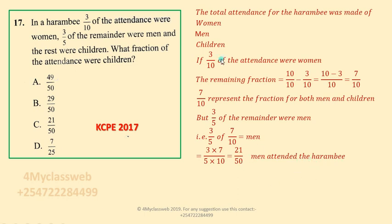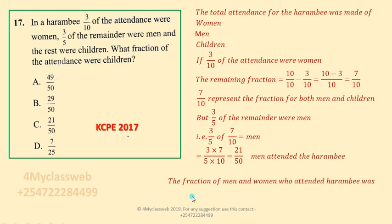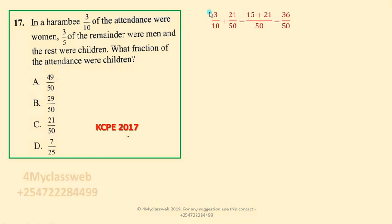So far we have the fraction for women and the fraction for men. Whatever is left will be the fraction of children who attended that harambee meeting. The fraction of men and women together is found by taking the fraction for women and adding the fraction for men to get the total fraction for both women and men.